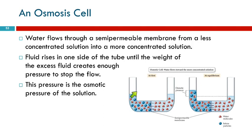Here we have some U-shaped tubes. At the bottom is a membrane, much like the cell wall — it's permeable to water but not to solutes. So it's called semi-permeable because it allows some things through and others not.